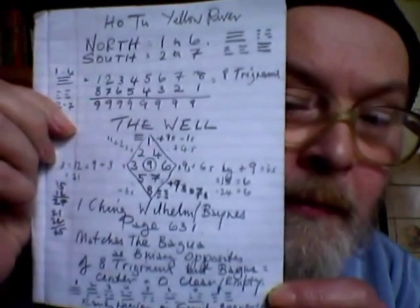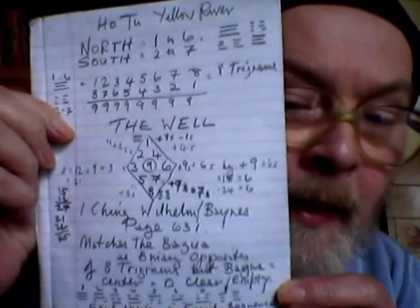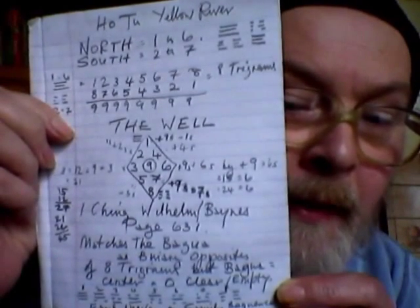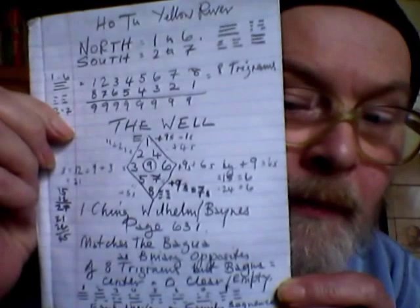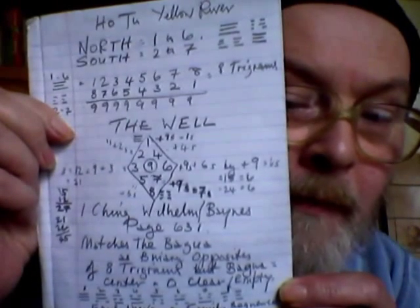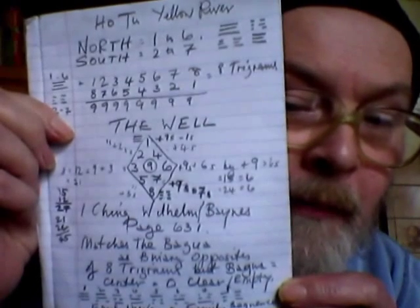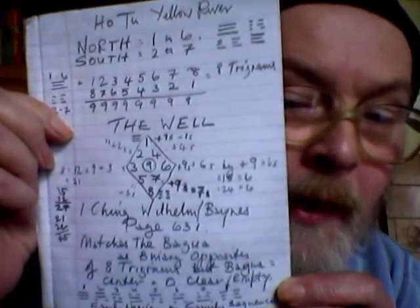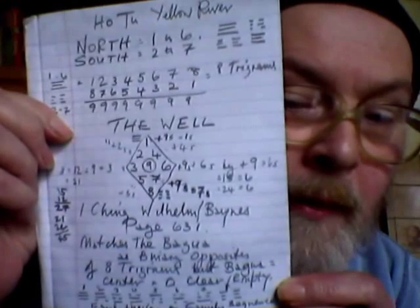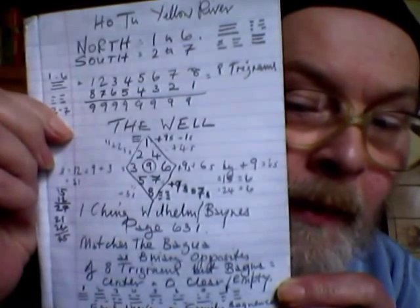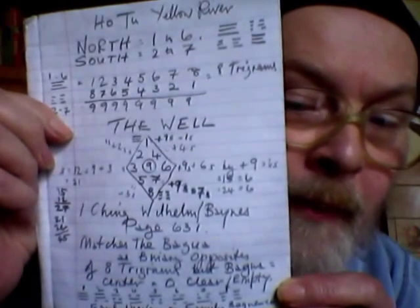Secondly, we look at the well. We see that the values are given as per the 1, 2, 3, 4, 5, 6, 7, 8, with essential 9. We find that 9 has a special quality, and if we add it to any of the values, we always get the same values.